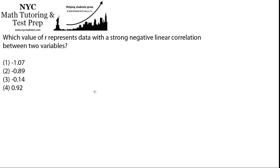Which value of R represents data with a strong negative linear correlation between two variables? This problem is basically just testing to see if you can remember what linear regression is and what the R value means.